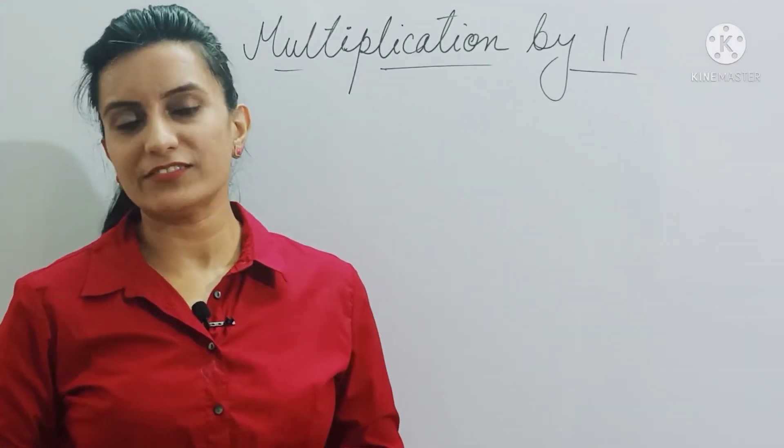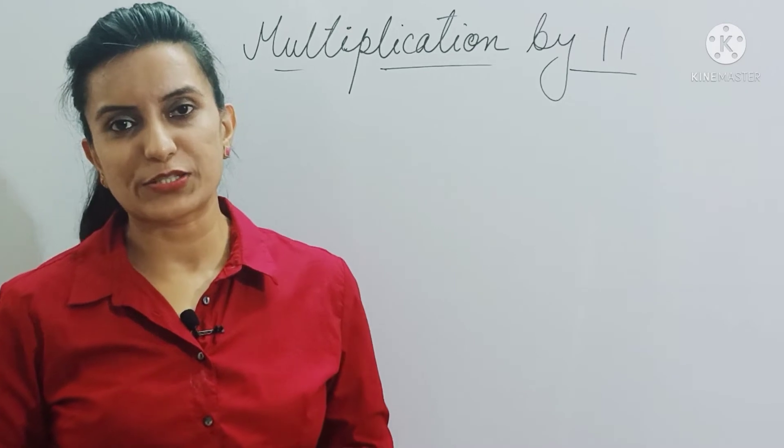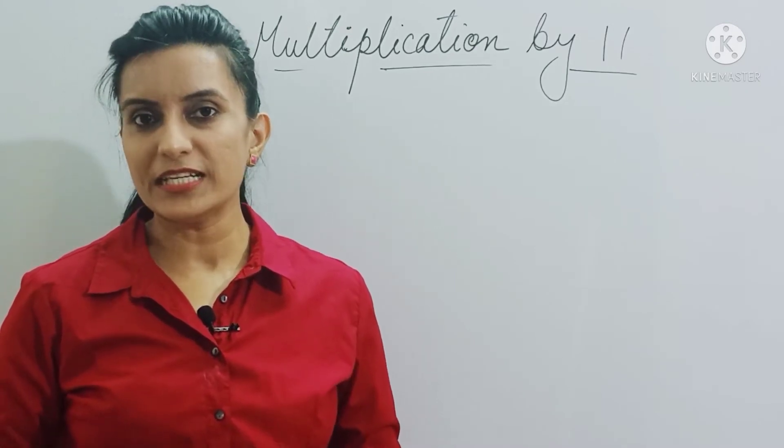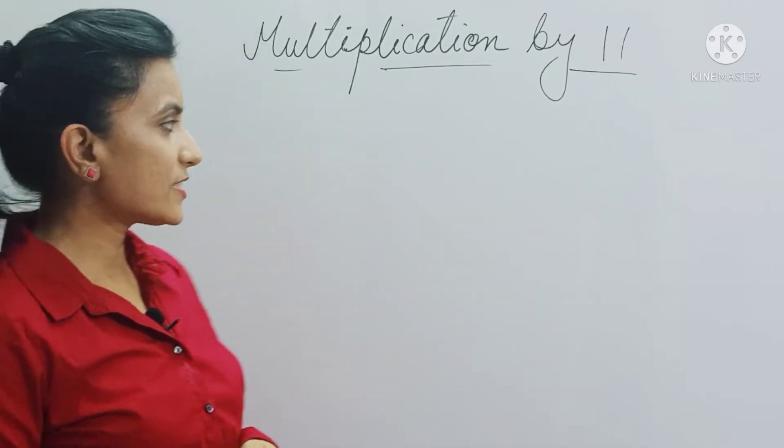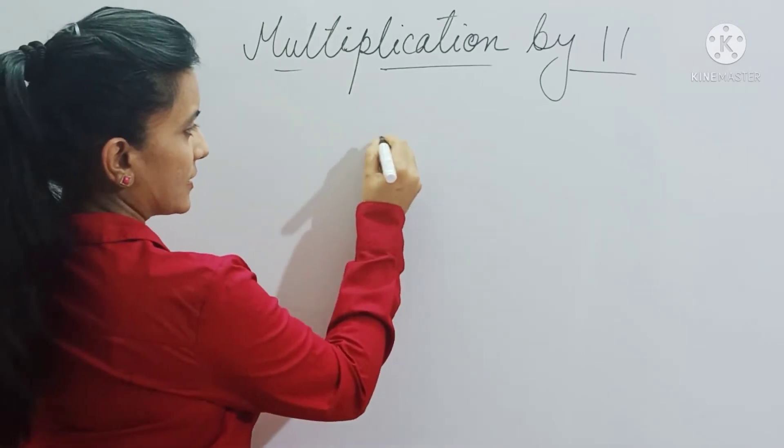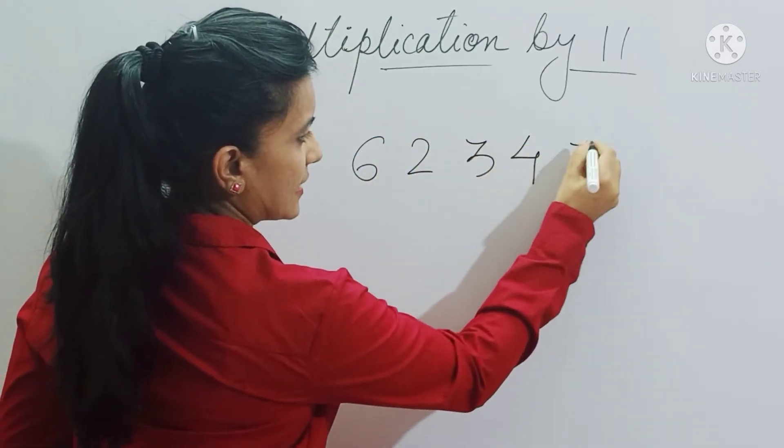Let's make this trick work even faster by not writing zeros at both the ends of the number. Let's do it mentally. So let's take one example: 62347.